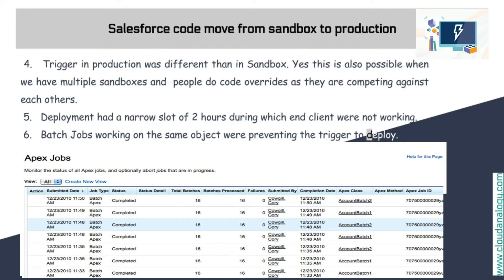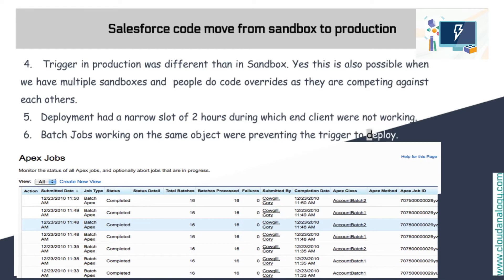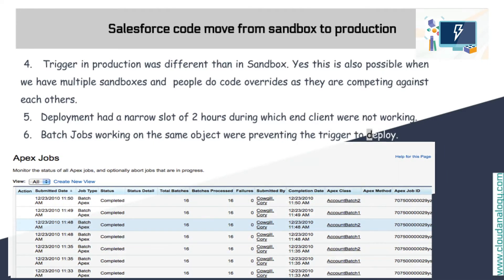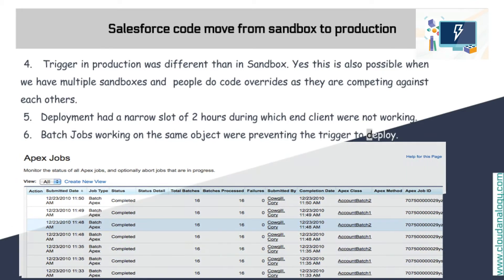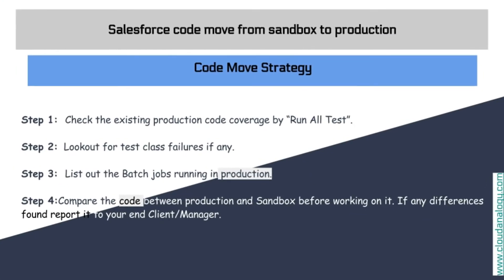Another problem was that deployment had a narrow window of only two hours during which end clients were not working. We needed to plan accordingly and make sure that all batch jobs that might be affected in the backend were stopped before our code could be deployed. We then sat down, analyzed all these problems, and started working on our code move strategy.